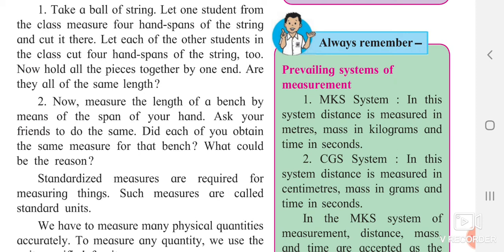In the CGS system: C stands for centimeter — distance is measured in centimeters. G stands for gram — mass is measured in grams. And S stands for seconds — time is also calculated in seconds. So in CGS, C is centimeter, G is gram, and S is seconds.